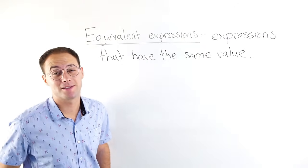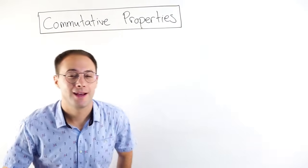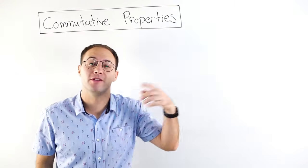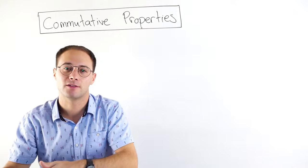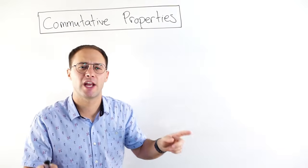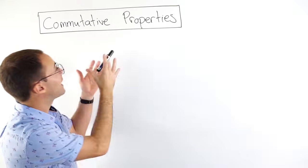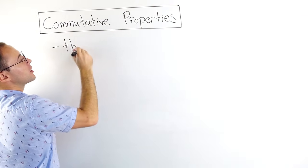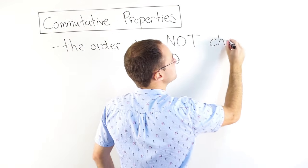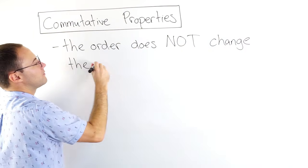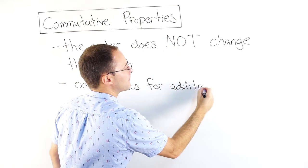Now let's get into the two types of properties we're going to talk about today. The first property is the commutative property. When you look at that word, you might think 'commute.' If you ask your parents about the word commute, they would probably think about commuting to work — going from their house to work and back. The distance would always be the same; it doesn't change whether you go from the house to work or work to the house. You could change the order, but the distance is still the same. That's the same thing with the commutative property: the order does NOT change the value. It only works with two types of operations: addition and multiplication.